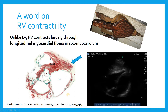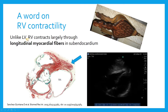That was the basic anatomy, which we'll revisit in a moment. Before we move on, I wanted to talk about RV contractility. Unlike the left ventricle, the RV contracts largely through longitudinal myocardial fibers in the subendocardium. The LV also has a very prominent subepicardial layer of circumferential fibers, so the LV contracts a little bit differently than the RV.